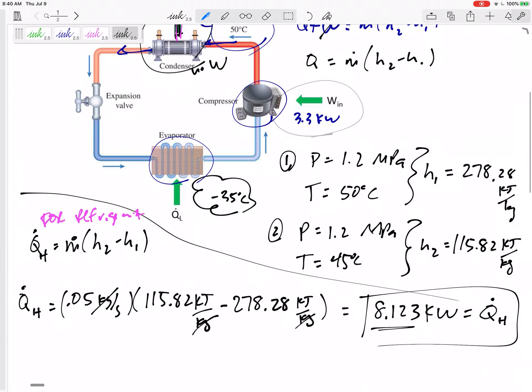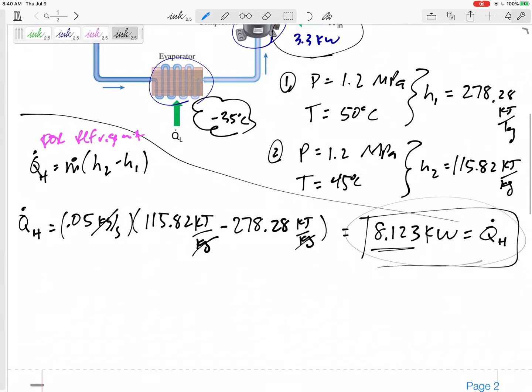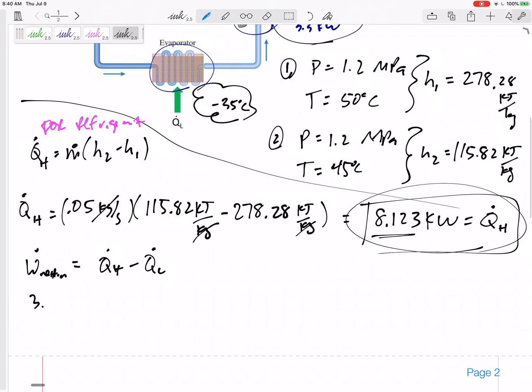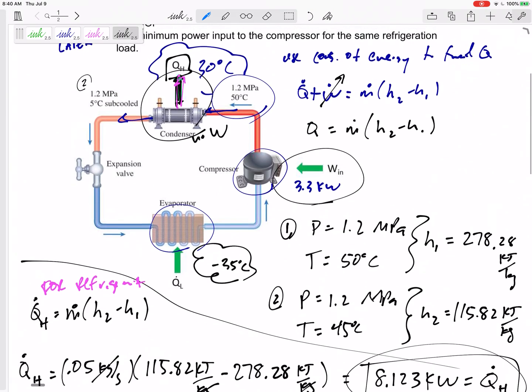I know the Win. I know the QH. How can I find the QL? W is QH minus QL. And I know this is 3.3, 8.123. QL is 4.823.